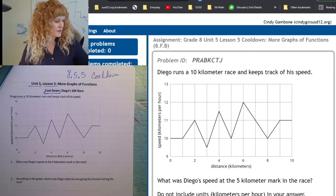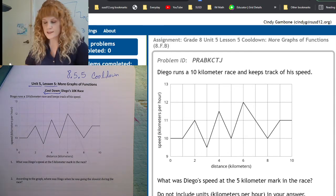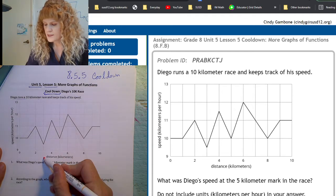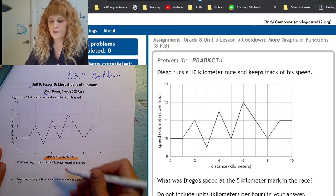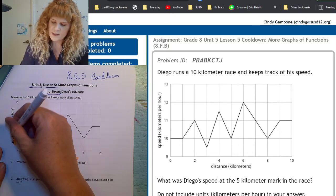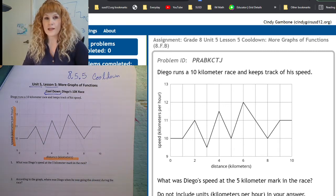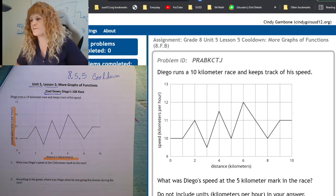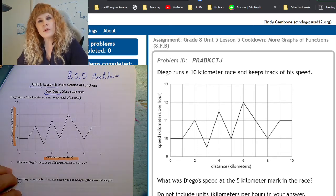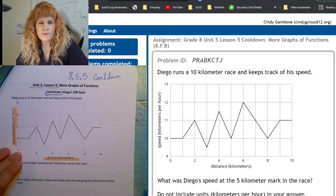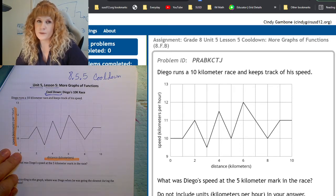Before we start reading the questions, always read the labels on the axes of the graph. On the x-axis the label says distance in kilometers. And on the y-axis it says his speed in kilometers per hour. Now let's answer the questions. You can put your answers into the computer or you can do it on your paper and then put them into the computer. But I'm only checking what you put in the computer.